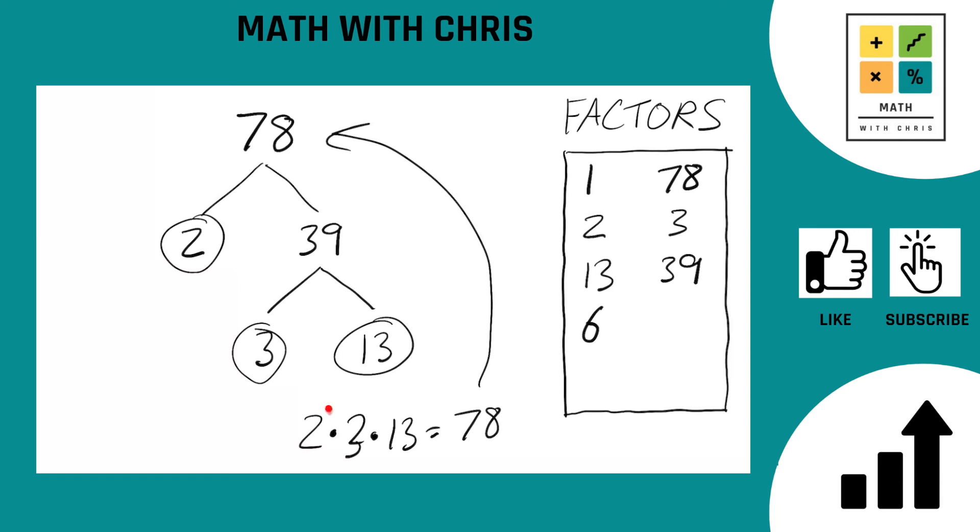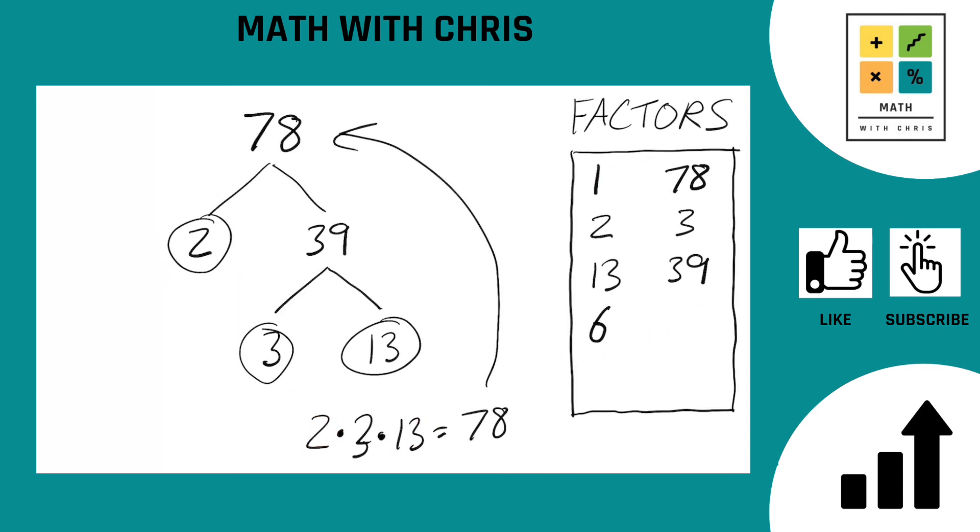What about 2 times 13? 2 times 13 is 26. We don't have 26 yet either. Let's bank the 26. And what about 3 times 13? 3 times 13 is 39. We already got that. And that's all the combinations so we are done finding the factors of 78. That's all of them.